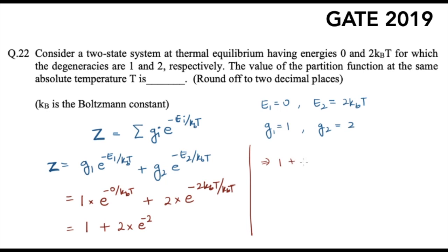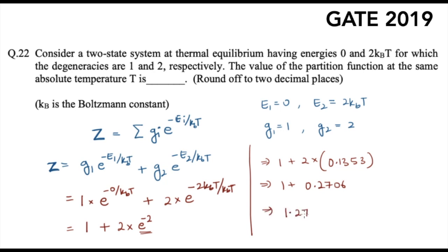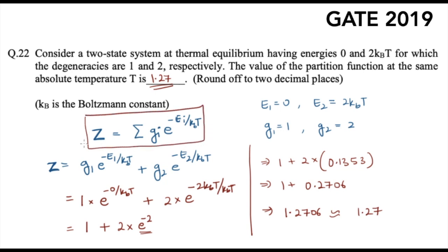So Z equals 1 plus 2 times 0.1353, which gives 1 plus 0.2706, and the final answer comes out to be 1.2706. Rounding off to two decimal places, the answer is 1.27. That is the correct answer for this question. It's a very simple, very straightforward question, and you need to remember this formula to find the partition function when the energy and degeneracy are given for a system.